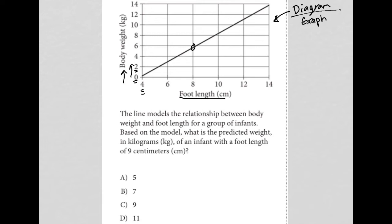Now I feel pretty confident that I understand the graph here. Reading the question, it says the line models the relationship between body weight and foot length for a group of infants. Based on the model, what is the predicted weight in kilograms of an infant with a foot length of nine centimeters?